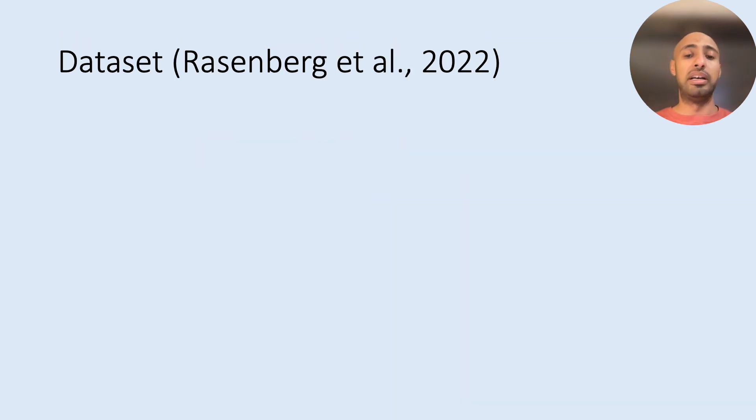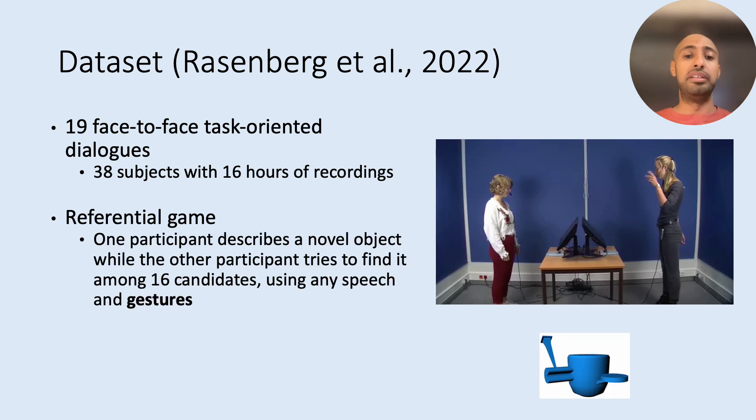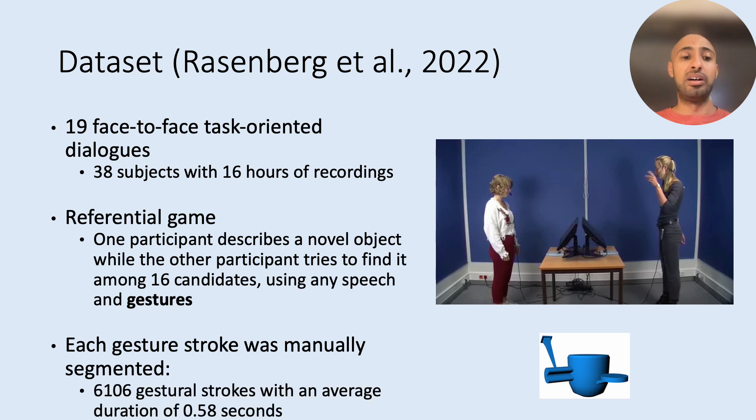So we use data collected from 19 face-to-face task-oriented dialogues of 38 subjects of more than 16 hour recordings. The setup of collecting data is that two participants were playing a differential game where one of them is a director trying to describe this kind of object that you see in the slide that does not have a conventionalized label through gestures and speech. So they use a lot of gestures, especially representational gestures. And each of these kinds of gestures were segmented and identified manually, resulting in more than 6,000 gestures.